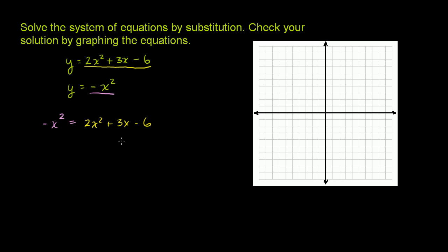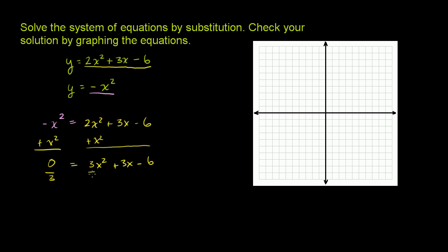So let's solve for x. Let's just add x squared to both sides, and we end up with 0 is equal to 3x squared plus 3x minus 6. And then just to simplify the right-hand side, we could divide both sides of the equation by 3 — divide everything by 3 — and we're left with 0 is equal to x squared plus x minus 2.